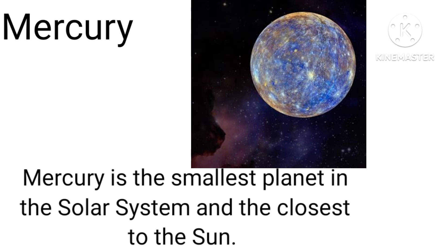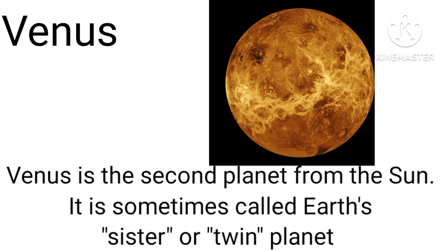Mercury is the smallest planet in the solar system and the closest to the sun. Venus is the second planet from the sun. It is sometimes called Earth's sister or twin planet.